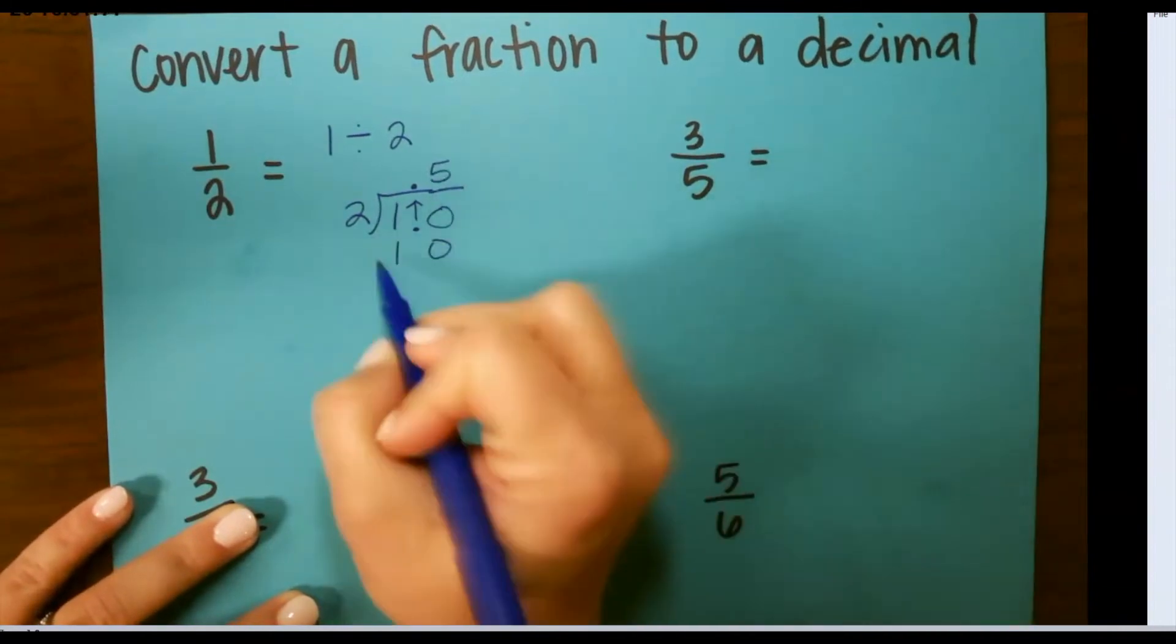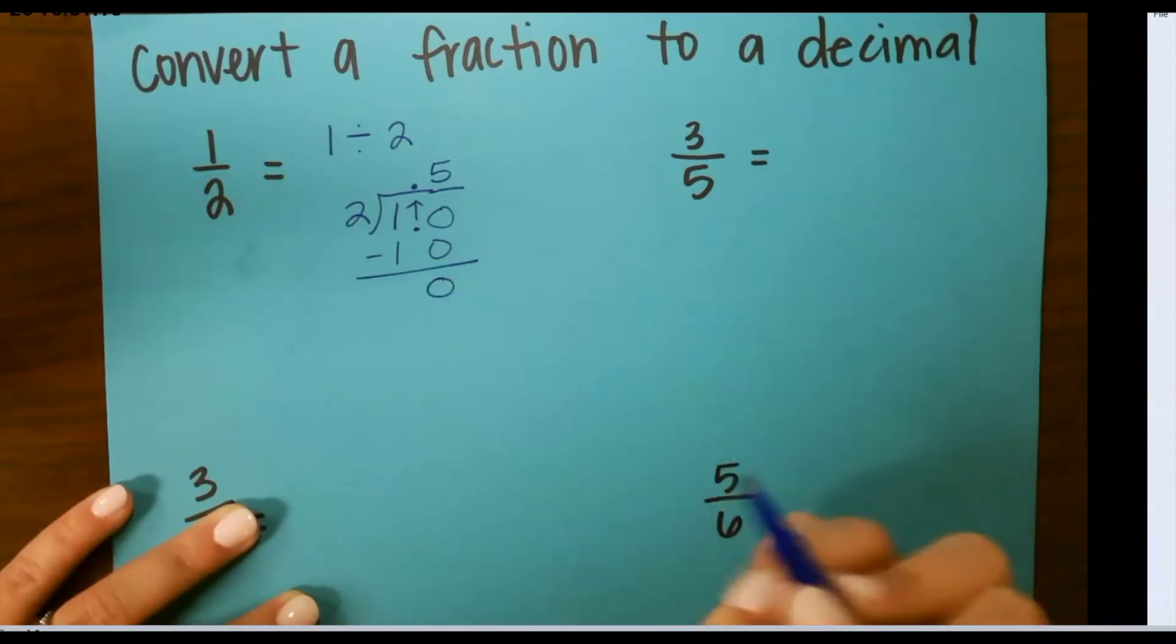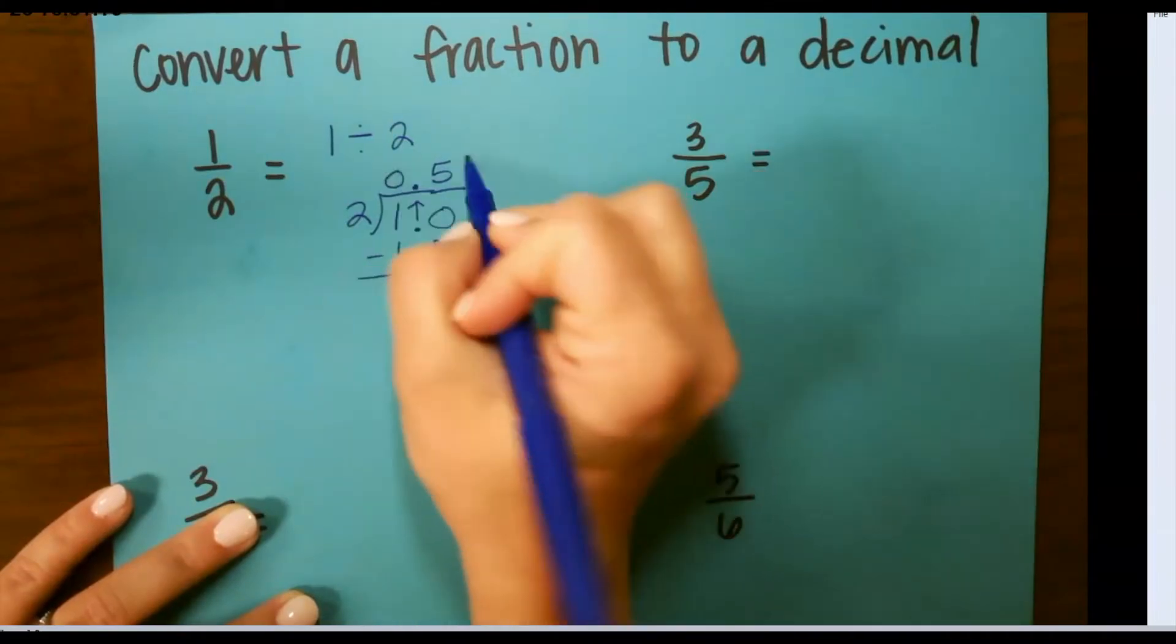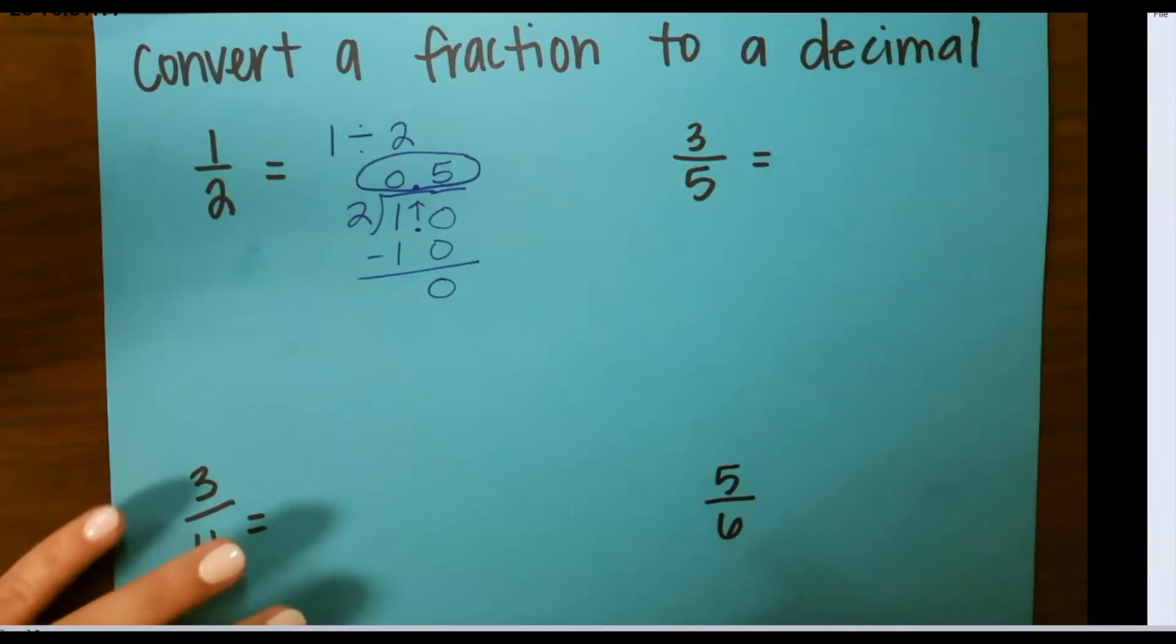5 times 2 is 10. Subtract and that will give me 0. So my decimal for 1 half is 0.5.